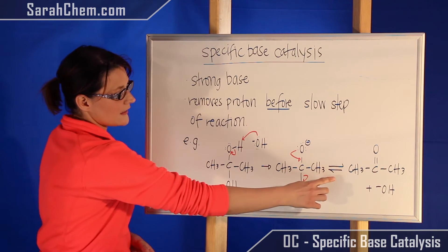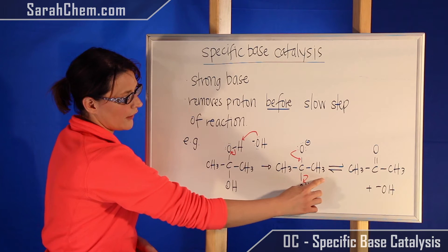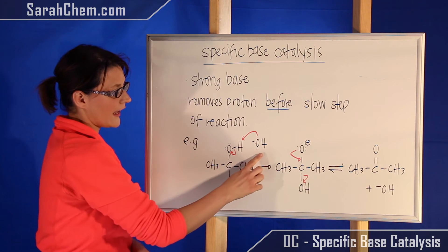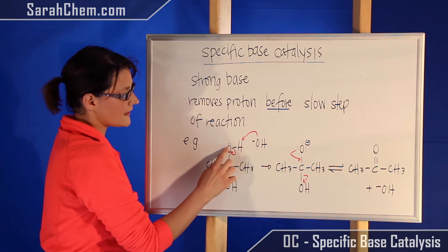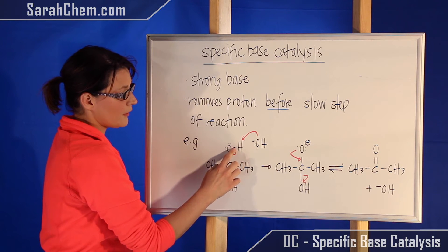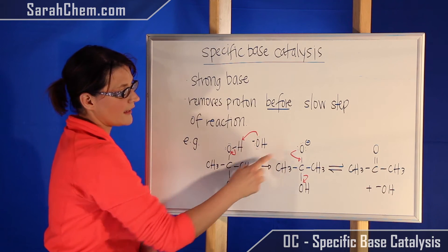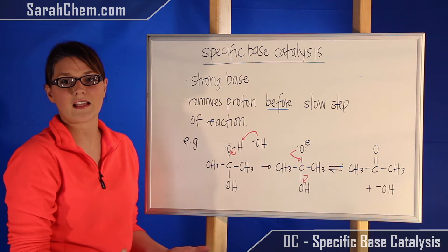But before we get to that slow step here where we have the double arrows transitioning from here to here, we're first going to have our strong base come and deprotonate the oxygen, dumping those electrons on the O, giving it an extra lone pair and thereby a negative charge.